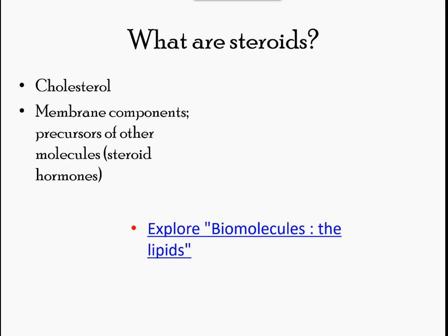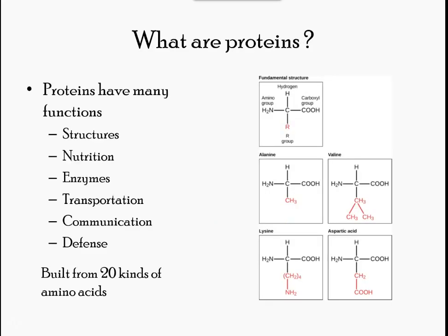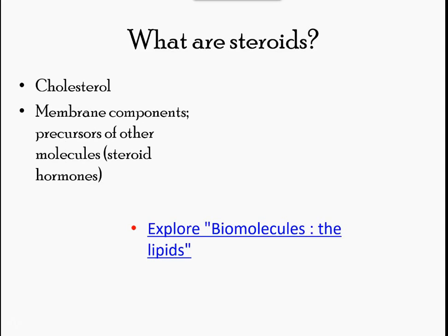Steroids do not resemble other lipids but are grouped with them because they are also hydrophobic. All steroids have four linked carbon rings, and several of them, like cholesterol, have a short tail. Cholesterol is an example of a steroid.